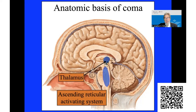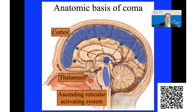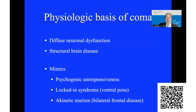there are areas of the brainstem — the ascending reticular activating system — which communicate with the relay station, the thalamus, which then sends signals to all sorts of parts of the cortex and cerebellum. That's the anatomic basis. The physiologic basis of coma has to do with either diffuse neuronal dysfunction — for example, a patient with a low blood sugar or a really high sodium — or structural brain disease, such as a brain tumor or an intracranial hemorrhage.